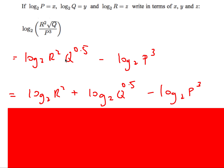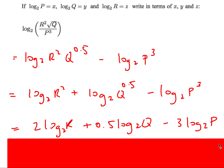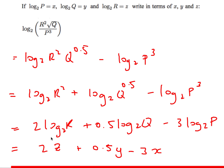Applying the laws of logs — multiplying inside means adding logs — then bring the powers down: 2 log₂ r + 0.5 log₂ q − 3 log₂ p. Now substitute back: log₂ r = z, log₂ q = y, log₂ p = x. The final answer is 2z + ½y − 3x.